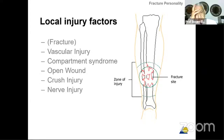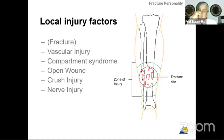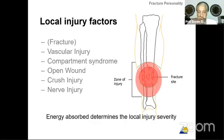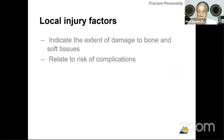For local injury factors, you take into consideration vascular injury, compartment syndrome, open or closed wound, crush injury, or nerve damage. Be concentrated not only on the zone of injury. Energy absorbed determines the local injury severity. Dr. Gamal Hosni showed us a lot of high-energy fractures which are very comminuted and very complicated to treat. Local injury factors indicate the extent of damage to bone and soft tissue and the related risk of complications.